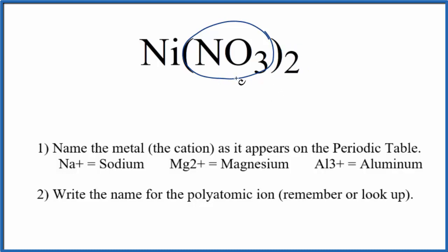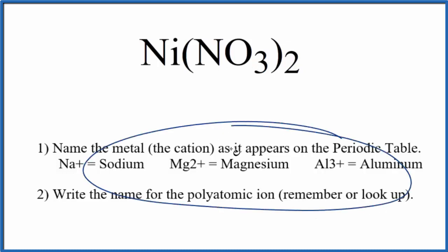So we have this polyatomic ion, nitrate, bonded to nickel, which is a transition metal. We have a metal and these nonmetals in the polyatomic ion here. That makes this an ionic compound, and we're going to use these rules to write the name for Ni(NO₃)₂.